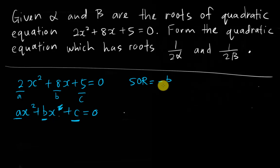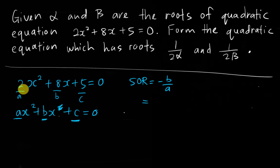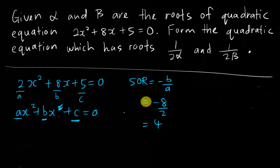We know that sum of roots is negative b over a. My b is 8 and a is 2, so negative b over a gives us negative 8 over 2, which equals negative 4.